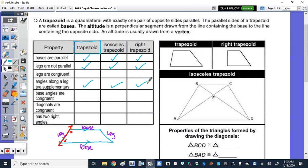Base angles congruent, not in every trapezoid. Diagonals are congruent, not in every trapezoid. And has two right angles, not in every trapezoid. So those are the properties of a trapezoid.